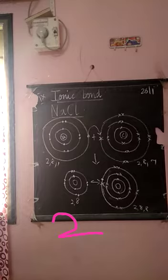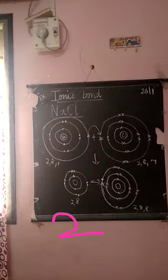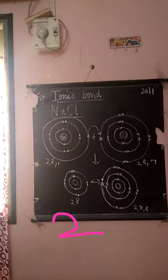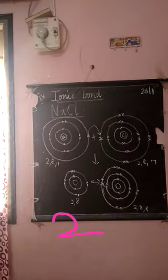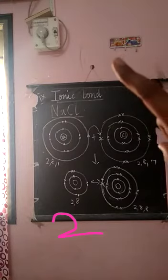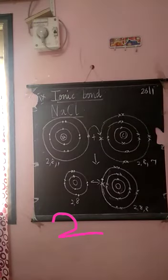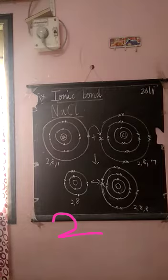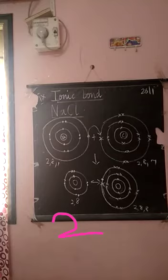Likewise, here also, see the sodium atom — in the valence shell, 1 electron is there. So, if sodium atom loses 1 electron, it gets the electronic configuration like noble gases, right? That is, 2 and 8. If it loses 1 electron, it can attain the stable electronic configuration.